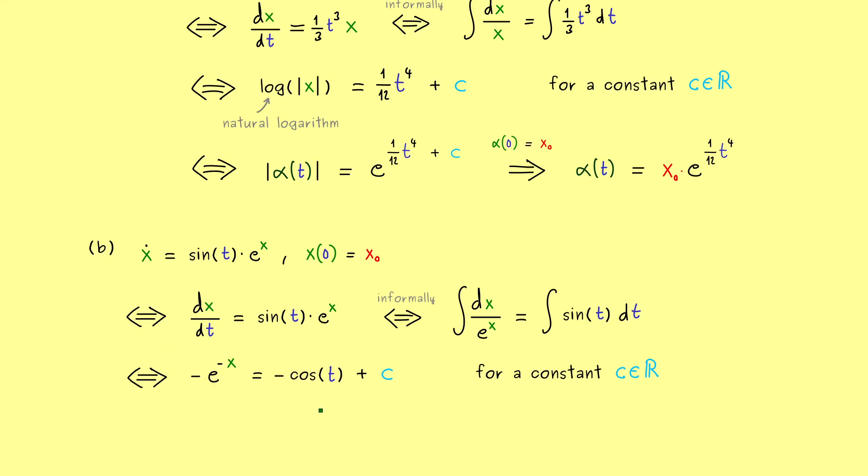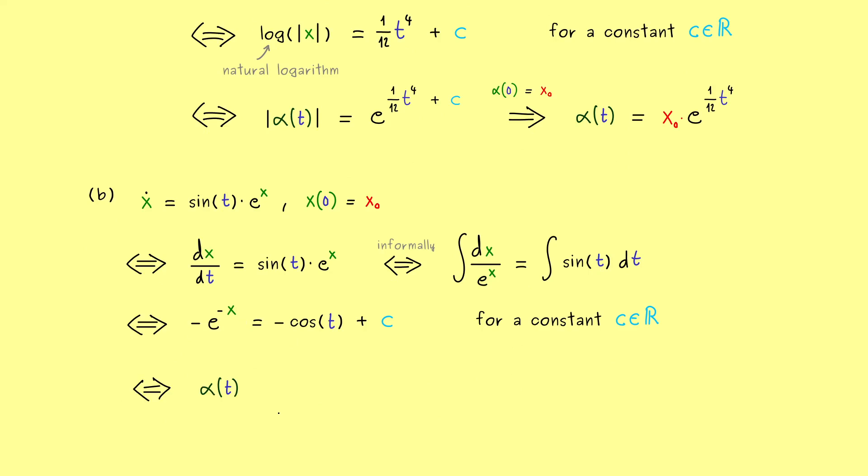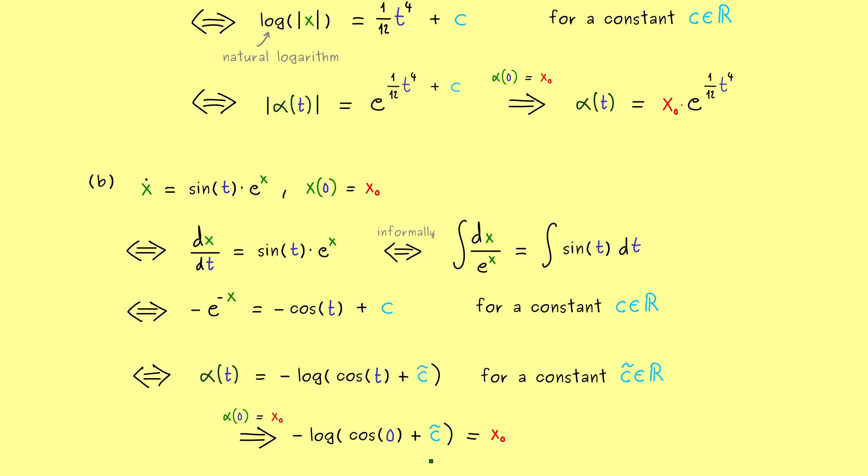In the next step, we just have to find the inverses again to find our solution x, or to say it in better terms, to find our solution alpha of t. For that we get minus the natural logarithm of cosine of t minus our constant c. Sometimes it's helpful to change the constant by a factor, so you simply introduce a new constant. We just change the name and then we don't have this annoying minus sign there. This is helpful because now we want to find the correct constant in order to fulfill our initial value condition. We put in 0 on the left-hand side and this should be equal to x0, and now we simply solve this equation for c tilde.